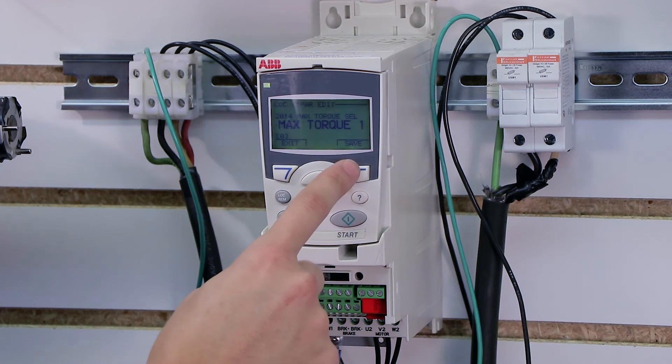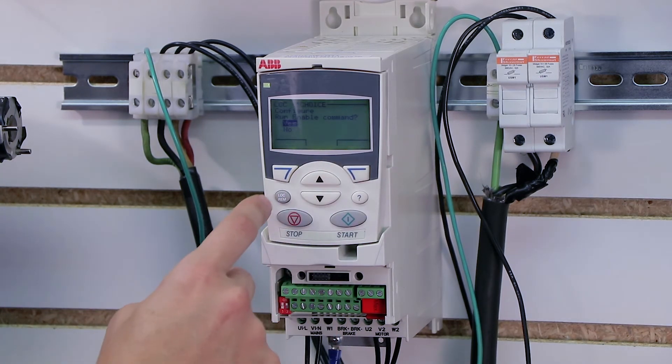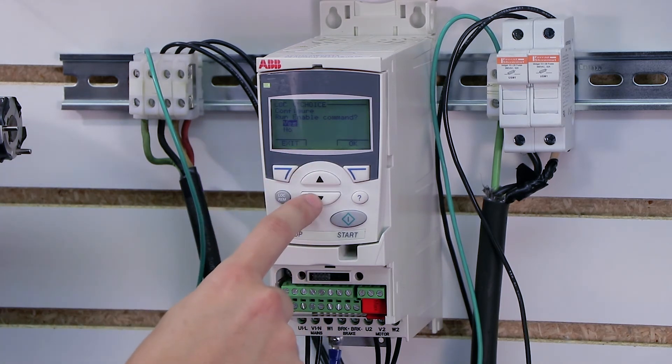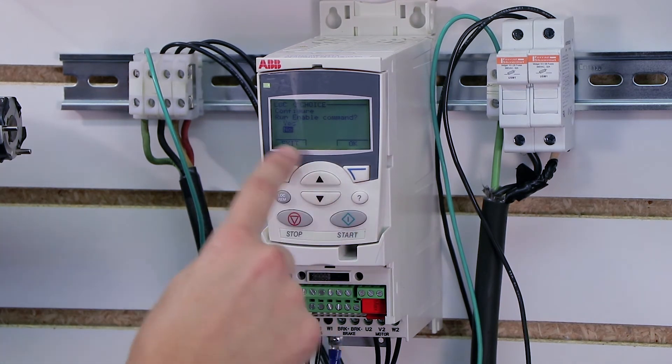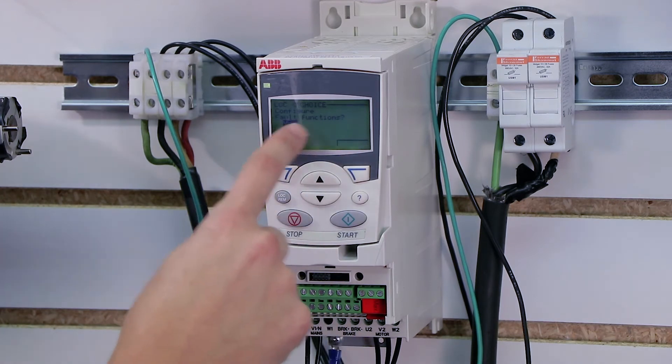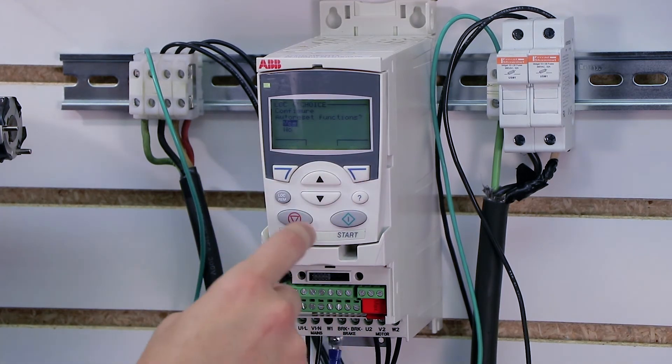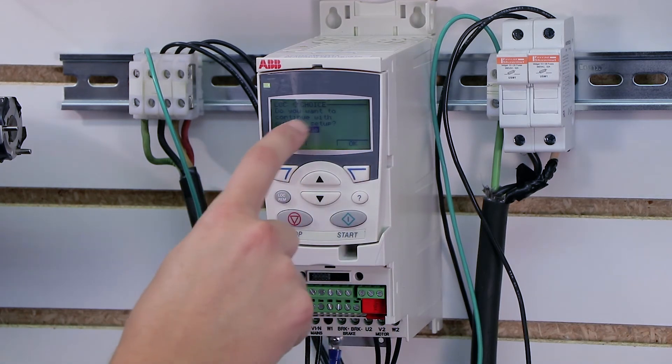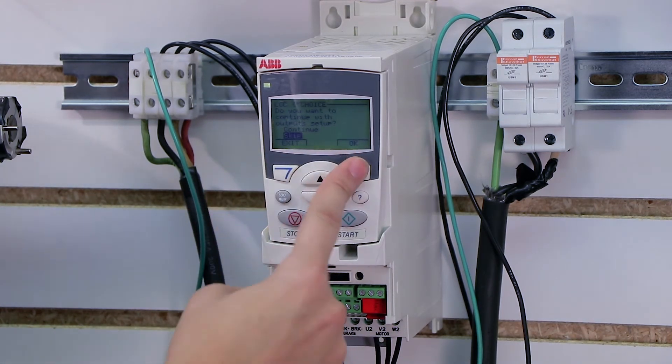Max torque, we'll just leave the default. And then it asks me if I want to configure the run enable command. This is a command that's built into the drive to require like a jumper. I'm going to click no. Do I want to configure the fault functions? No. Do I want to configure the auto reset functions? No. Do I want to continue with output setup? No. Skip.